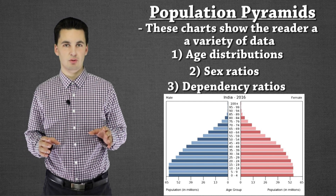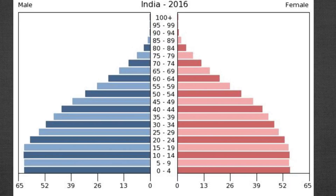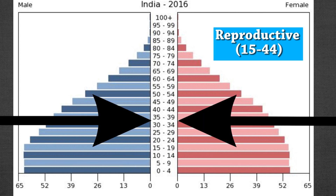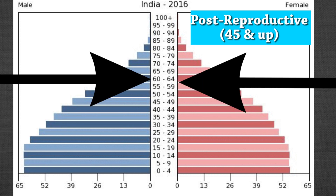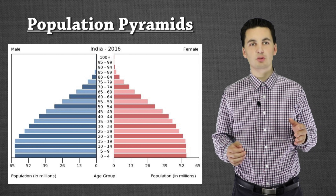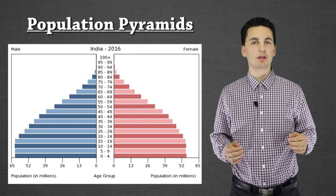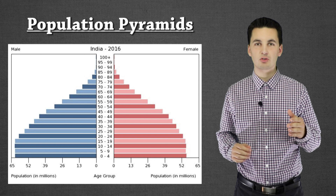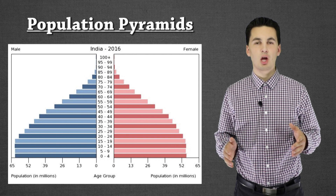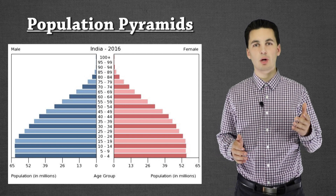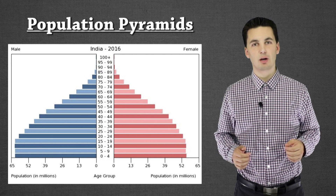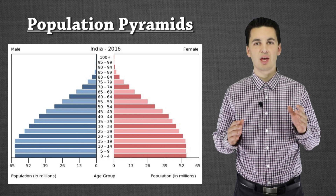We can also see reproduction stages: how many people are in the pre-reproduction stage, how many are in the reproductive stages, and how many are post-reproduction. This is important for understanding CBR, CDR, and NIR and how these impact a country. Population pyramids give us a lot of information — we can see trends that let us make really good educated guesses and inferences about current and past society.